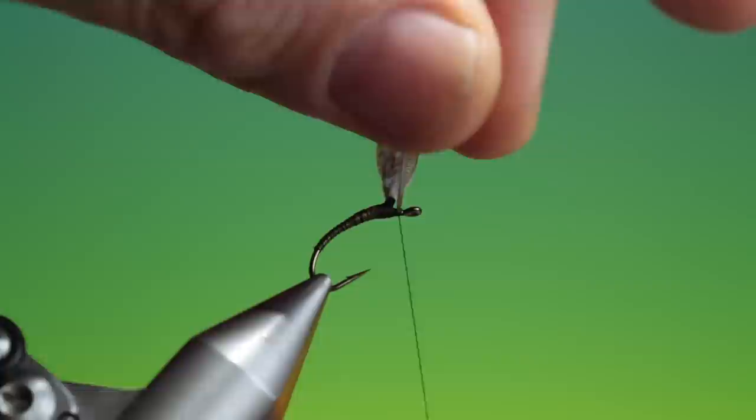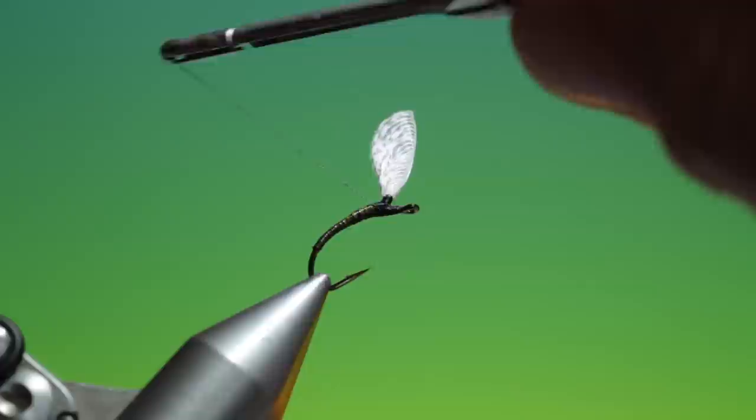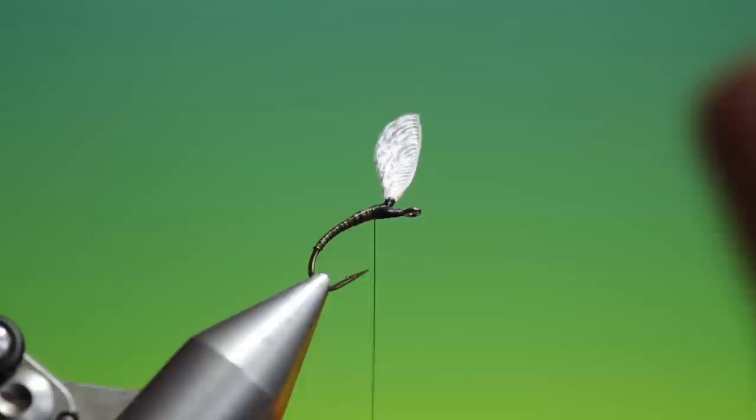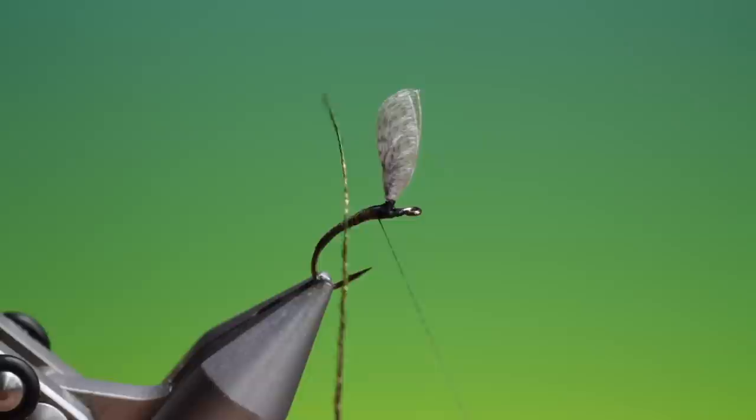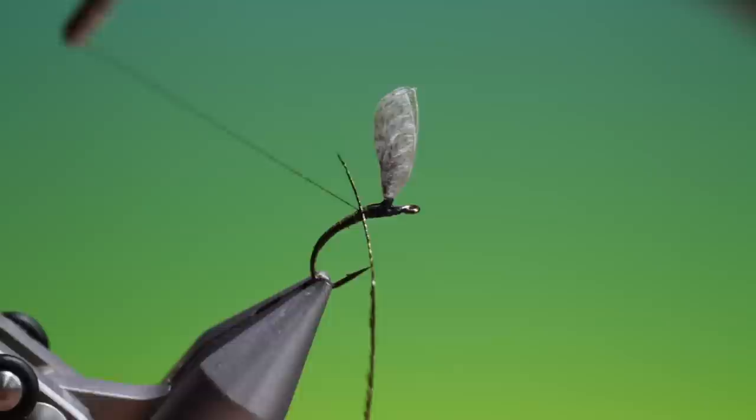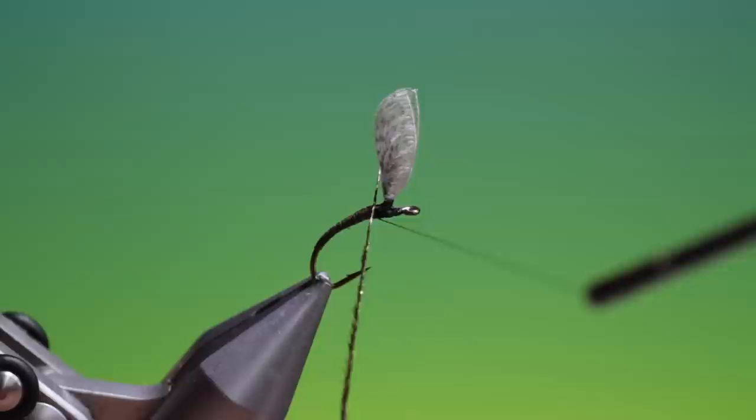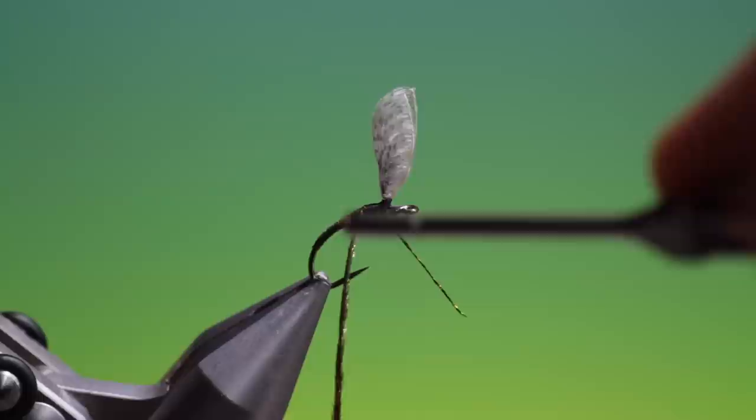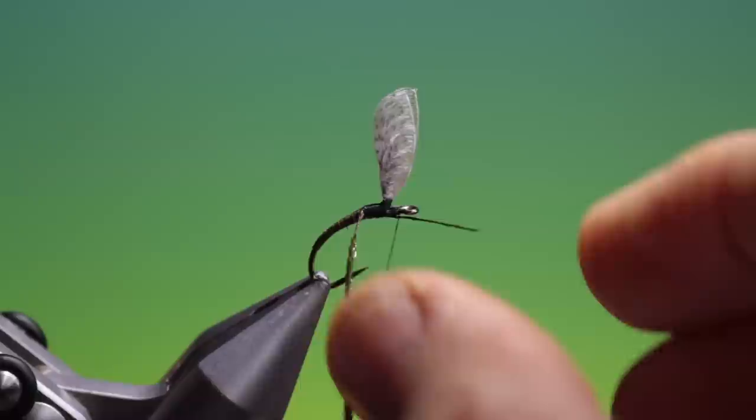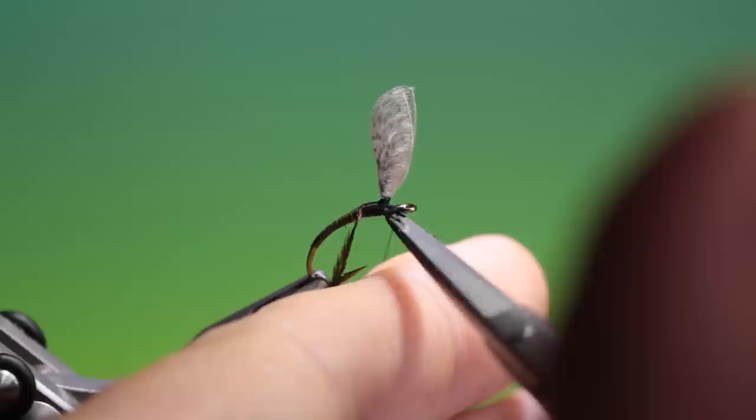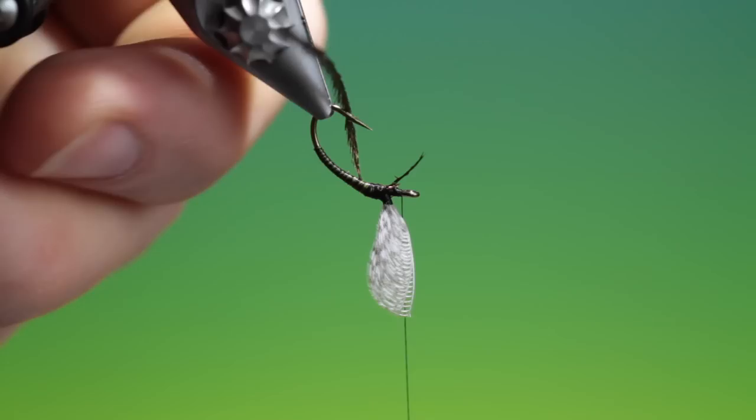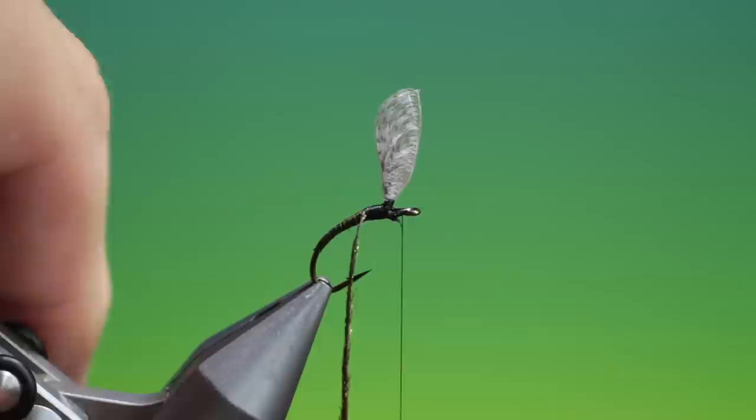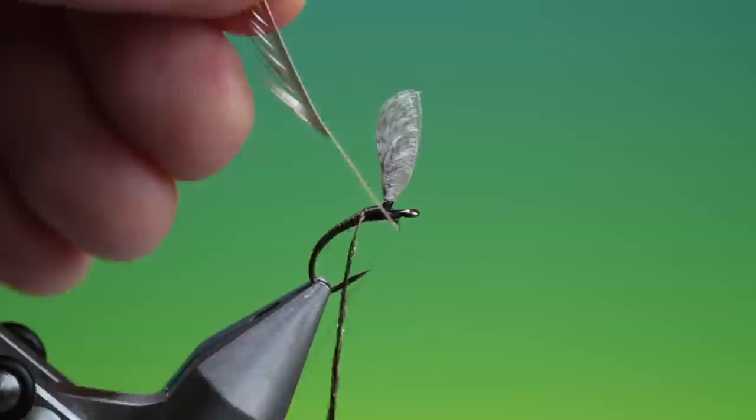Trim it off. Go back over here. And then a little bit further down the body. Take a peacock herl. Tie that in. I'm going to trim that off. Get rid of that. Take a hackle. I've stripped half of the hackle off.